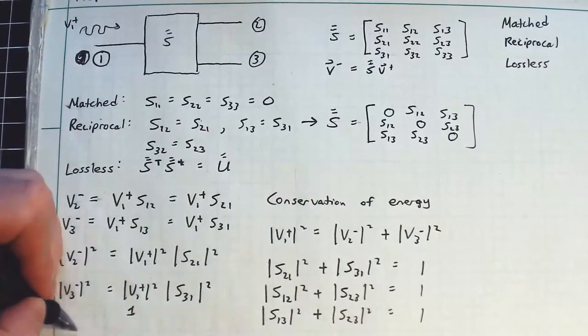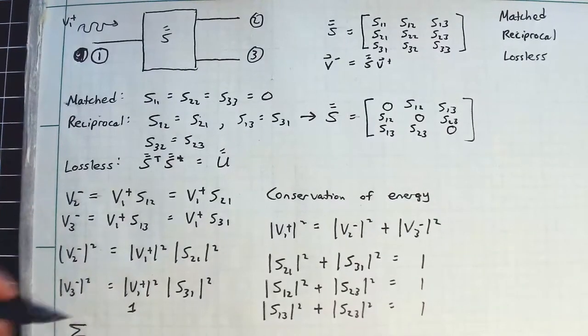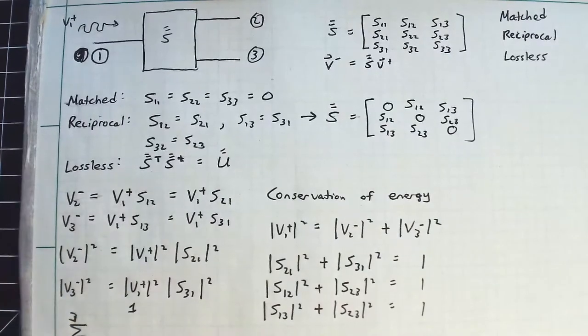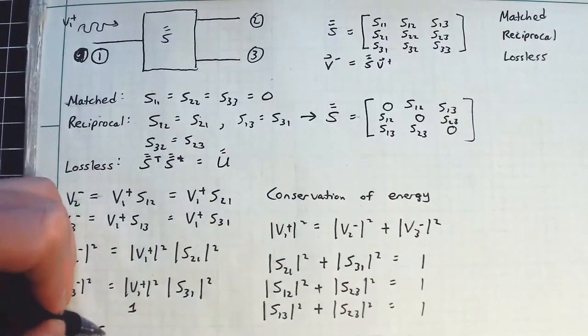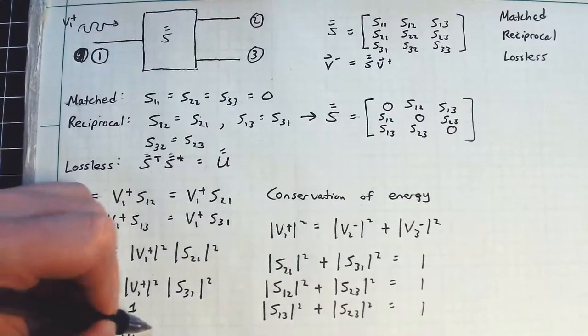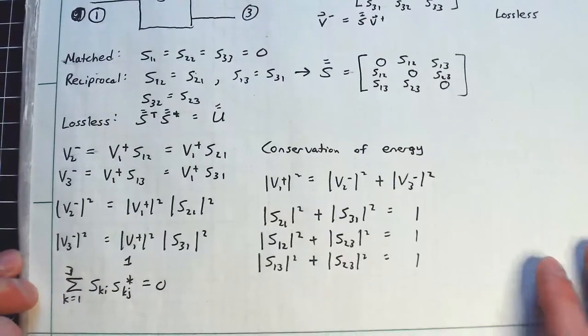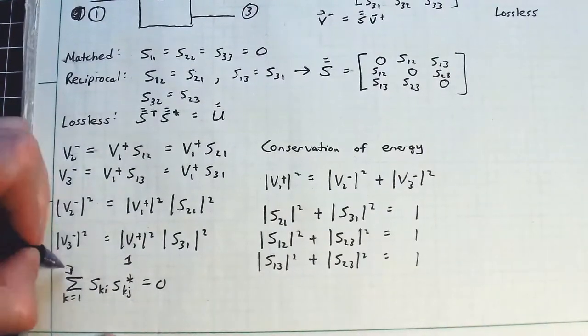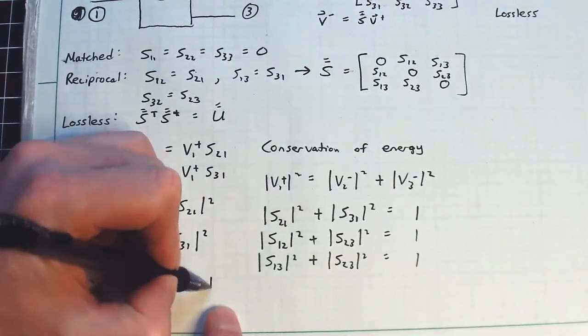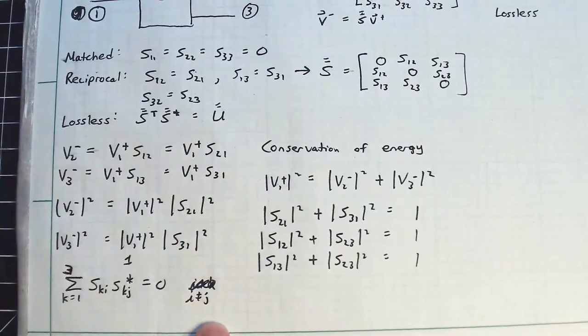So we didn't really do the derivation per se, but mathematically that will manifest as the summation from K equals one, two, three, because it's a three-port network. You get SKI times SKJ conjugate has to equal zero. This summation has to be satisfied for I not equal to J.